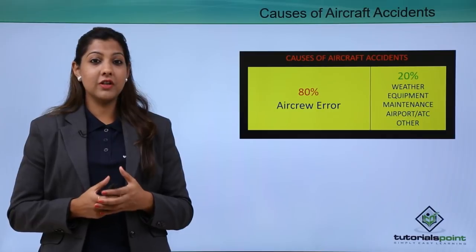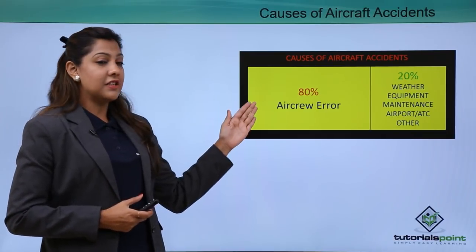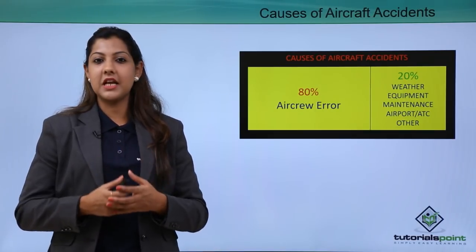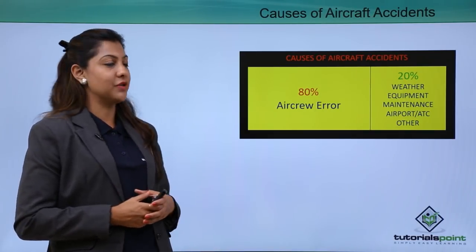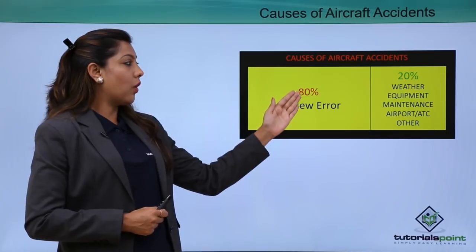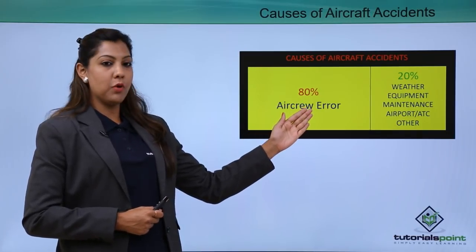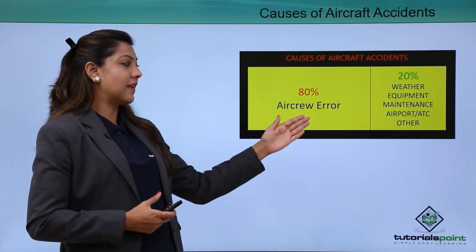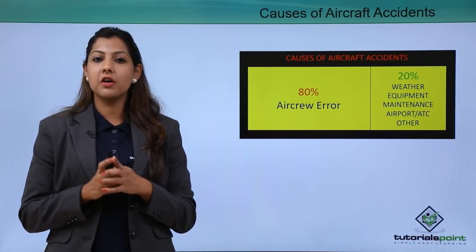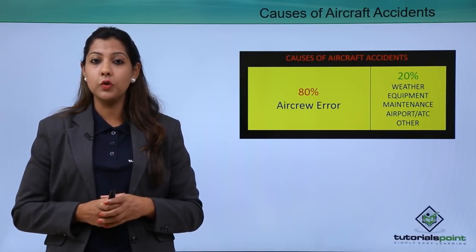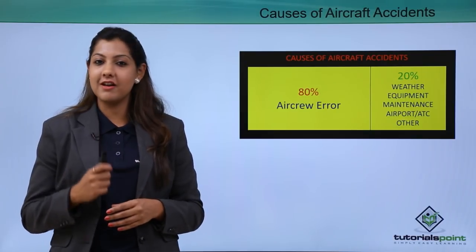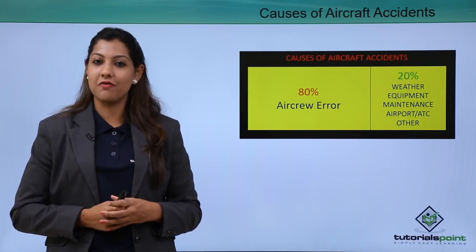It's devastating to know that 80% of accidents in flight happen because of air crew error — whether it's a mistake of the flight deck crew or the cabin crew. Whereas 20% of accidents happen because of weather changes, equipment issues, maintenance, ATC — air traffic controllers — or other miscellaneous factors. So if 80% of errors are caused by crew, it is very essential to understand that crew plays a very major role in aviation.